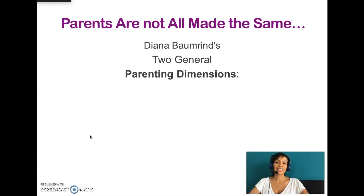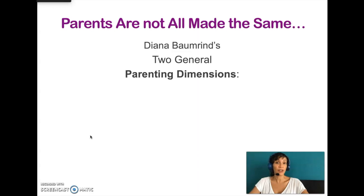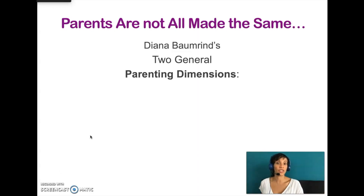Diana Baumrind was a clinical and developmental psychologist who conducted studies in mostly preschool children in the 60s and 70s using a variety of research methods, including naturalistic and laboratory observations as well as parental interviews. She also followed up some of those children longitudinally at ages 9 and 15 with some of the same results. She was looking to systematically document dimensions along which parents differ in terms of how they choose to parent their children.